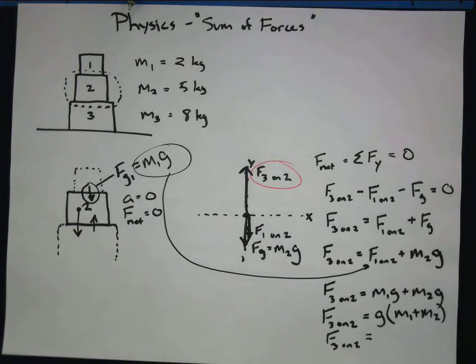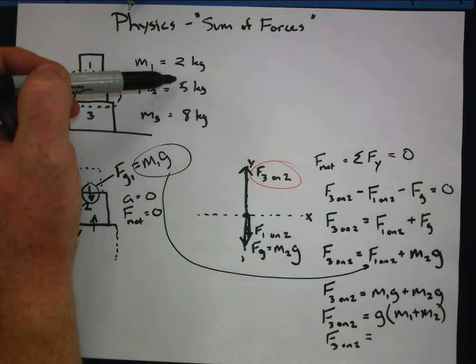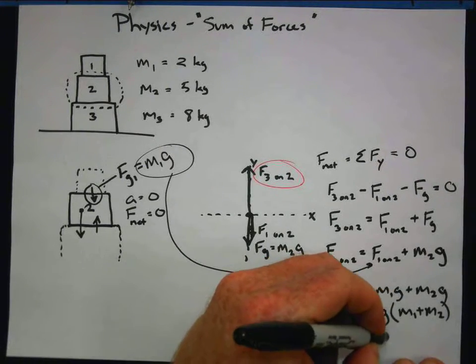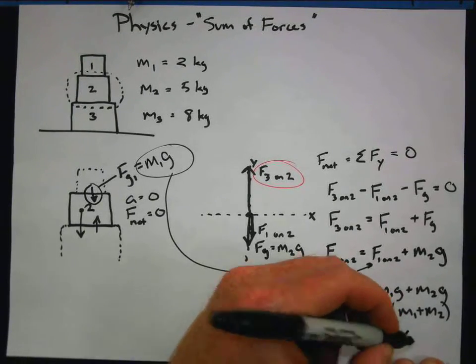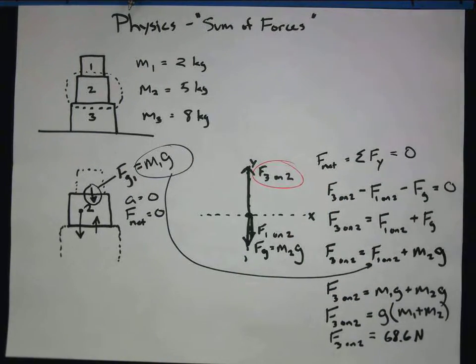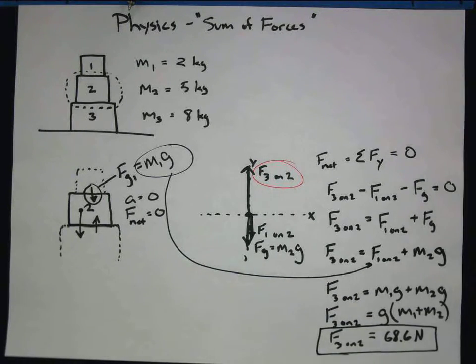So when I plug some numbers in to my handy-dandy calculator, here it is. I'm going to have M1 plus M2. That's going to be two kilograms plus five kilograms. That gives me seven kilograms. And I'm going to multiply it by 9.8. And so I get a value of 68.6. And the units of force are always going to be newtons. So I was just able to find how hard box three is pushing up on box two.